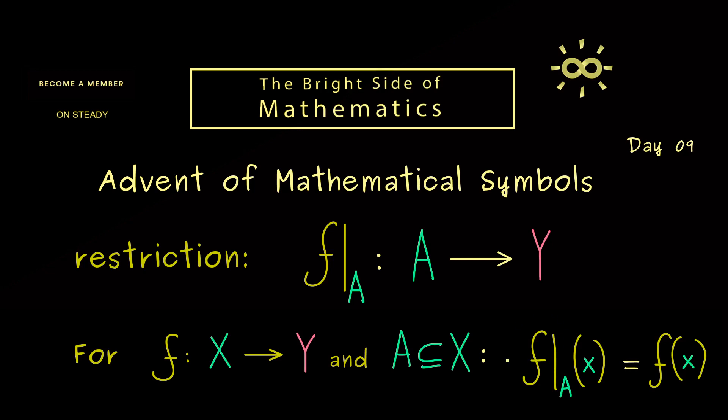However, you should note here for our new map we are only allowed to use points x that come from the set A. So you see, the reason for introducing this new map is not for calculating the values. Rather, we use it if we want to work with the map as an object but now defined on a smaller set.